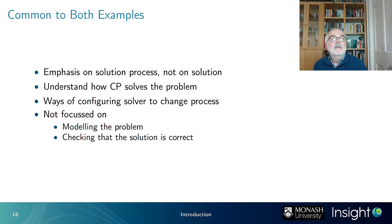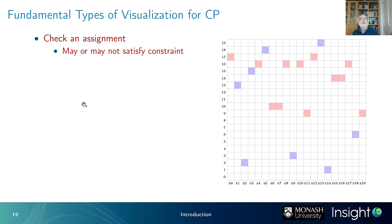These tools are good for understanding how CP solves a particular problem and configuring the solver, but they're not focused on modeling the problem or checking that a solution is correct — and that's what we want to do with this tutorial. We have a number of fundamental types of visualizations used for constraint programming. First, an assignment check, where you assign variables to values and see whether they satisfy the constraint.